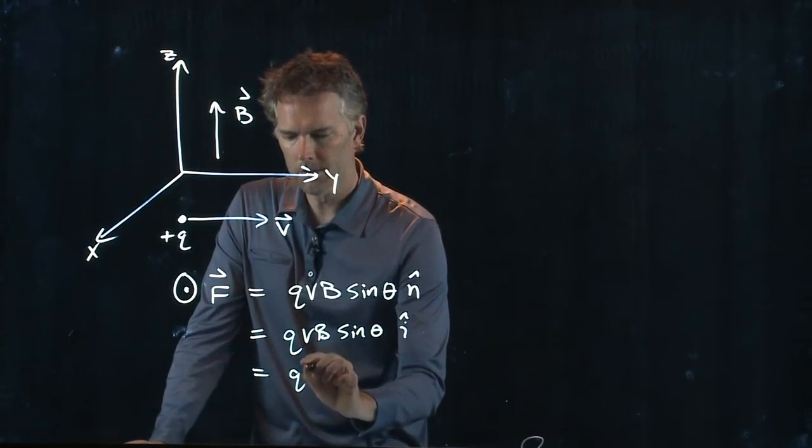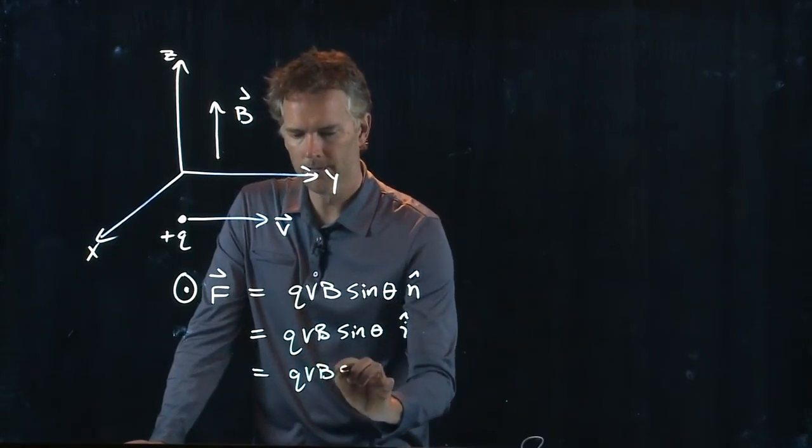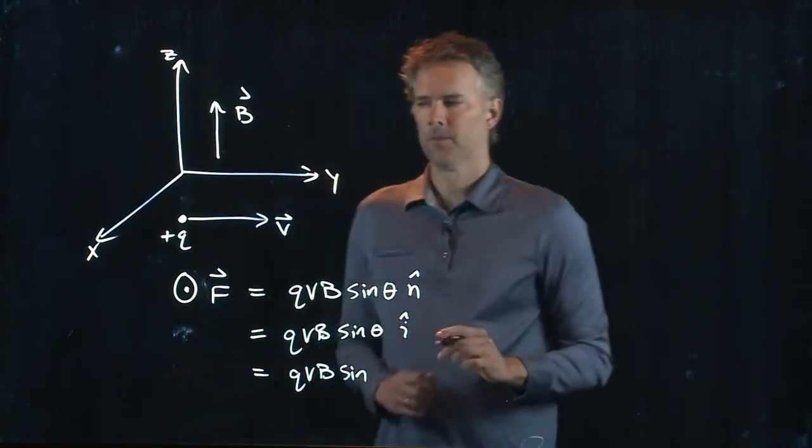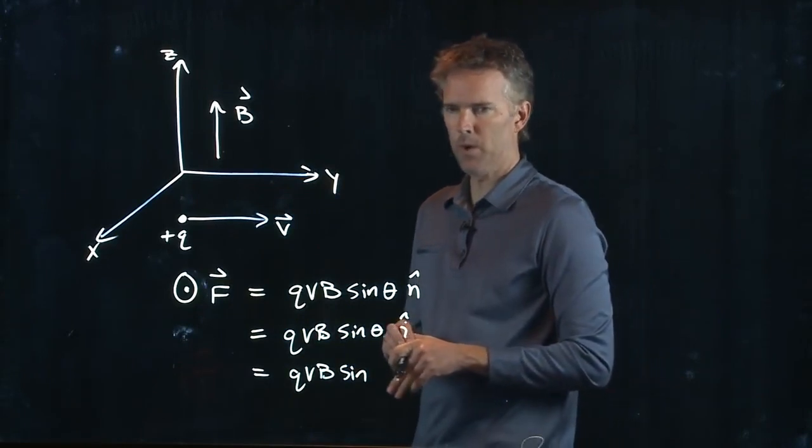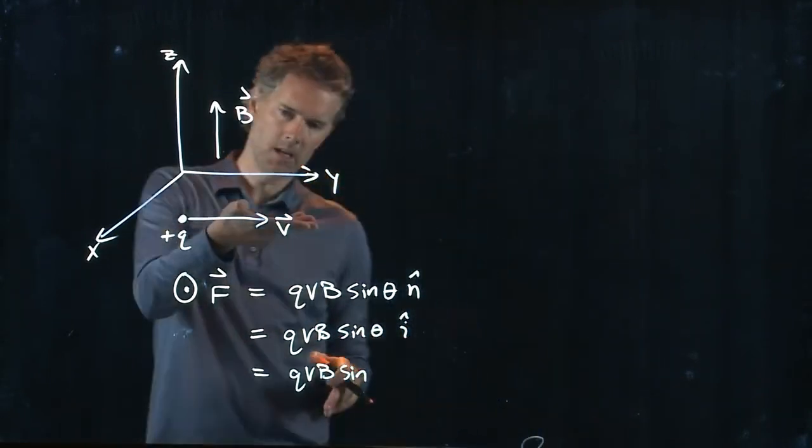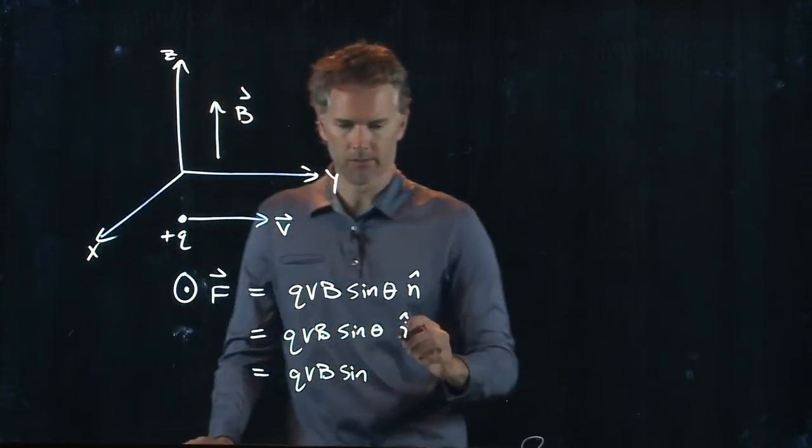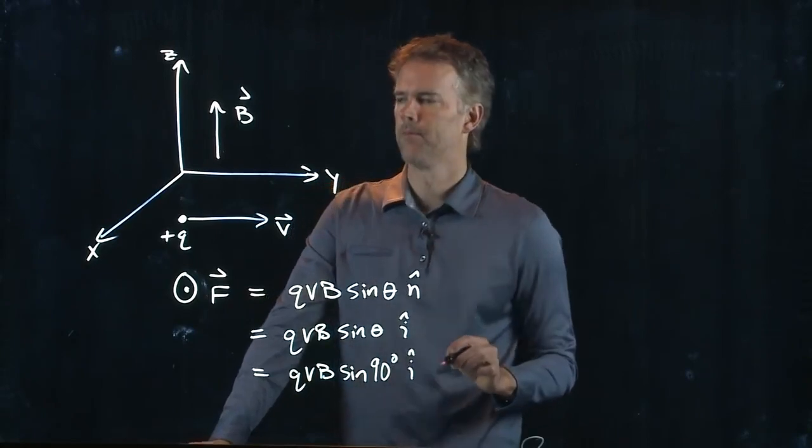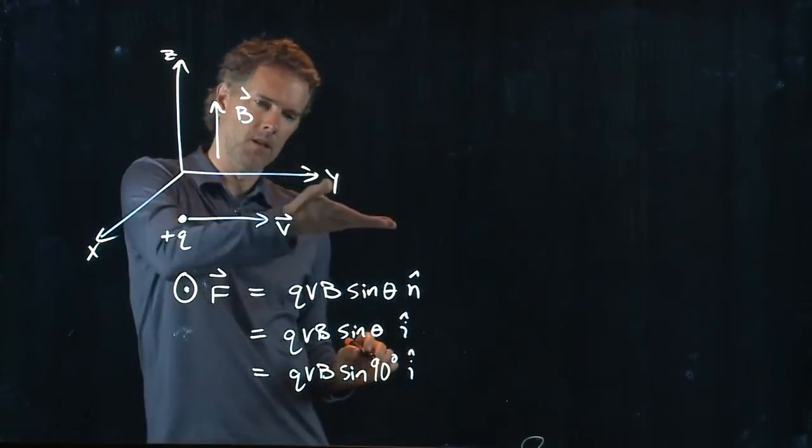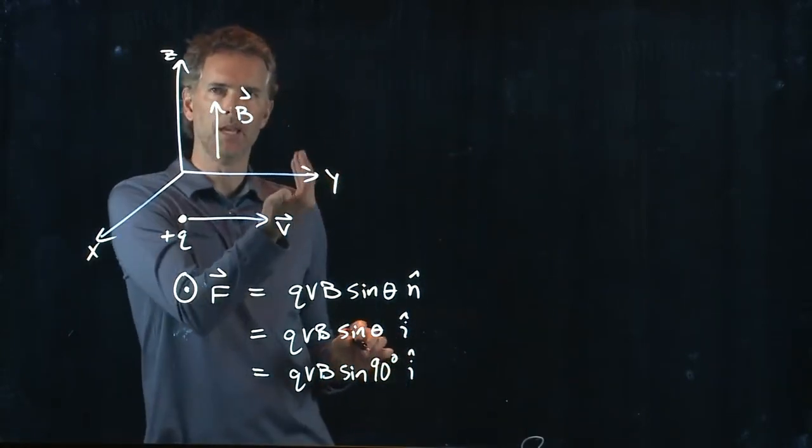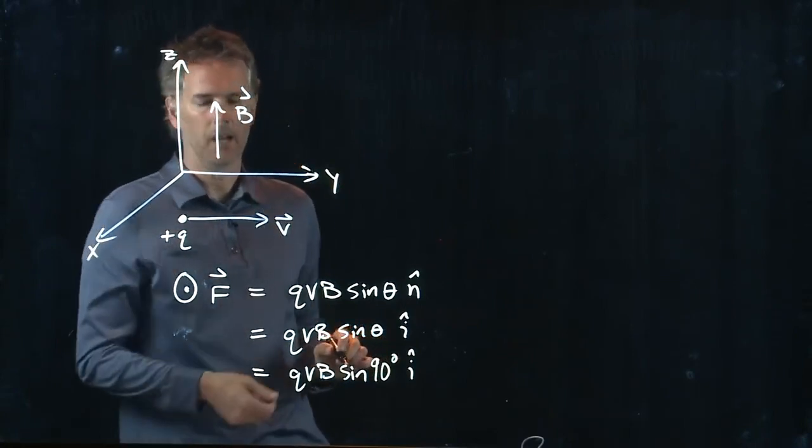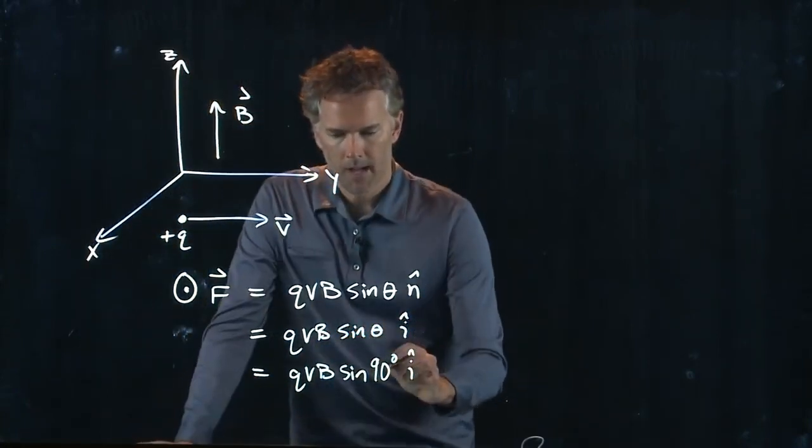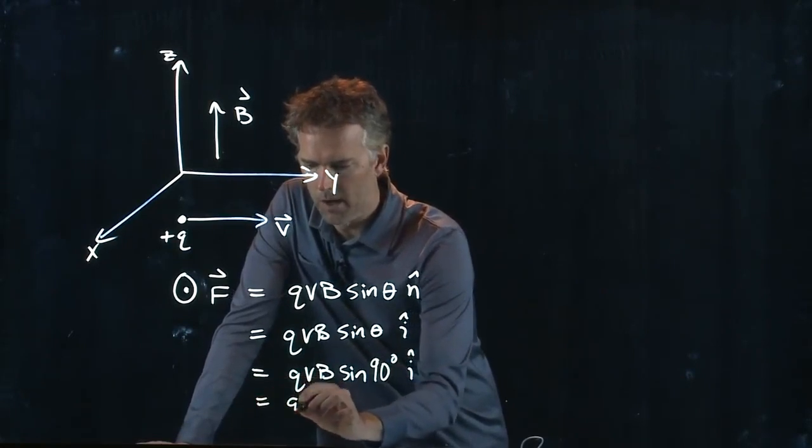What is the angle between V and B? It's 90 degrees, right? They're at a right angle. V is in the y-axis, B was in the z-axis. And so you get 90 degrees. And sine of 90 degrees is, of course, 1.